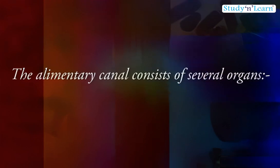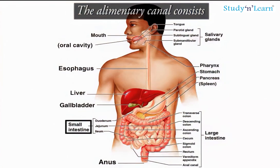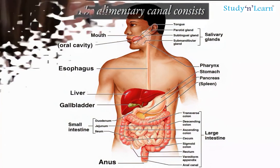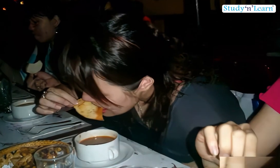The alimentary canal consists of several organs: Mouth, Buccal or oral cavity, Pharynx, Stomach, Small intestine, and Large intestine. Three glands associated with it are: Salivary glands in the buccal cavity, Liver, and Pancreas. We eat various types of food which has to pass through the same digestive tract.